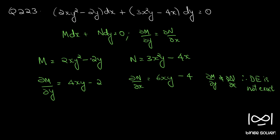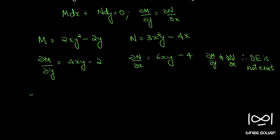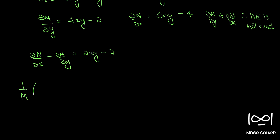We have to find the integrating factor to convert this into an exact equation. Taking the difference: ∂N/∂x minus ∂M/∂y gives (6xy minus 4) minus (4xy minus 2), which is 2xy minus 2. If we take 2y common, we have 2xy minus 2, and this divides with M.